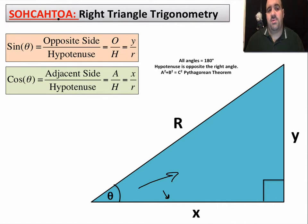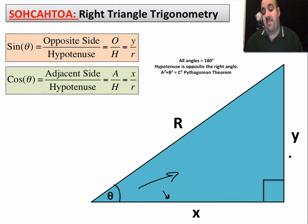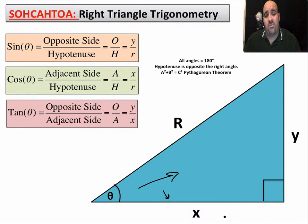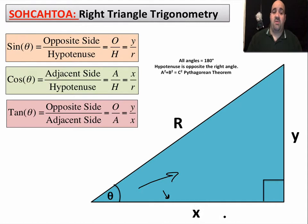Tangent equals opposite over adjacent. Tangent of this angle equals the opposite side, which is y, divided by the adjacent side, which is x. Those are our three main trig functions. Sine is opposite over hypotenuse, cosine is adjacent over hypotenuse, tangent is opposite over adjacent.